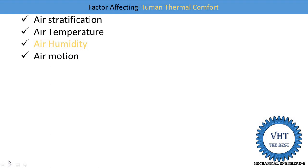The next factor is air velocity or air motion. A proper air velocity is required for transferring heat from our body. Air coming from an air conditioning system should not exceed 5 meters per second. If the velocity is too low, it is not able to transfer heat from our body, and if the velocity is too high, we also do not feel comfortable. So air velocity is set at less than 5 meters per second in air conditioning systems.